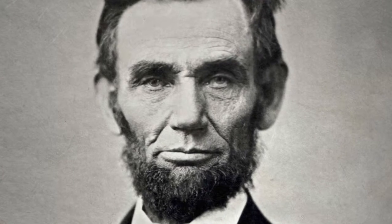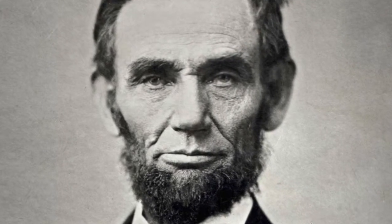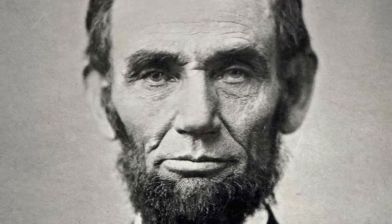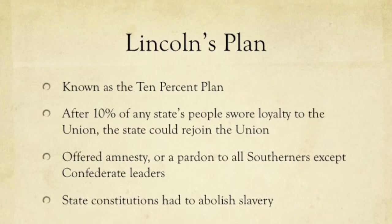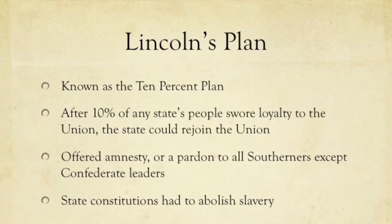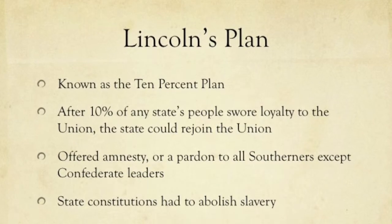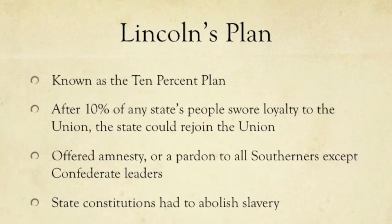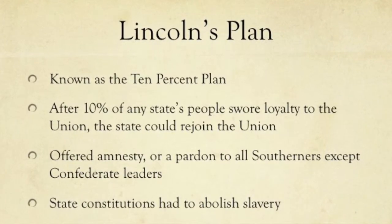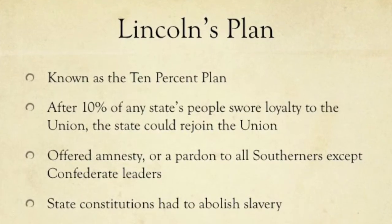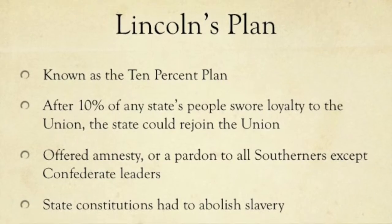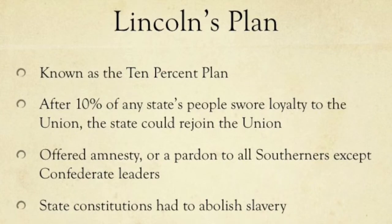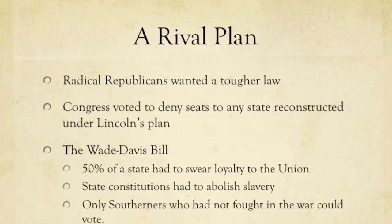So Lincoln is faced with a very, very difficult task. In addition to all of that, he has to figure out how to bring the country back together. So he proposes what comes to be known as the 10% plan, which after 10% of any state's people swear loyalty to the Union, the state would be rejoined. There would be a pardon to all Southerners except the Confederate leaders, and all that he asks is that the state constitutions abolish slavery.